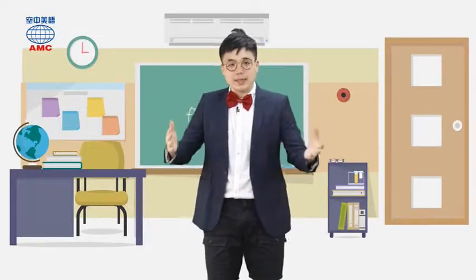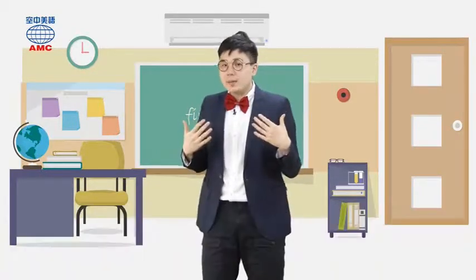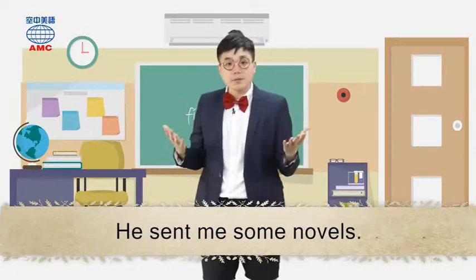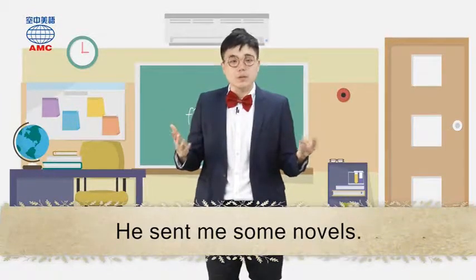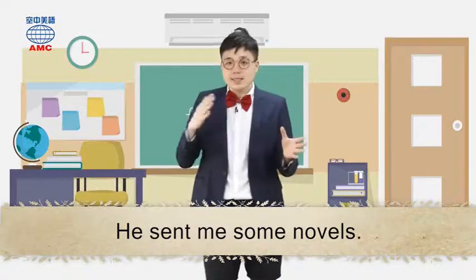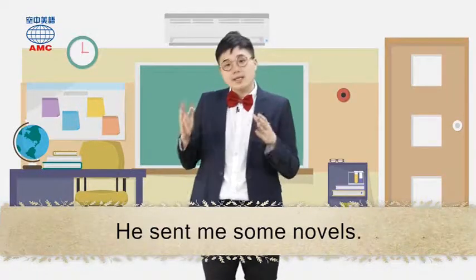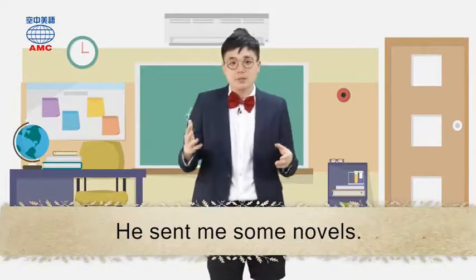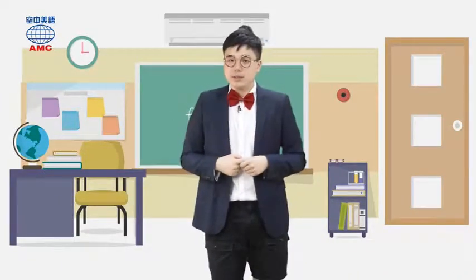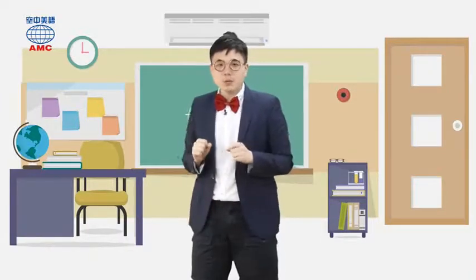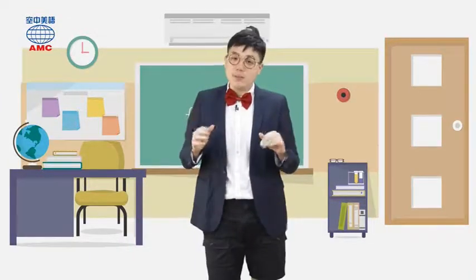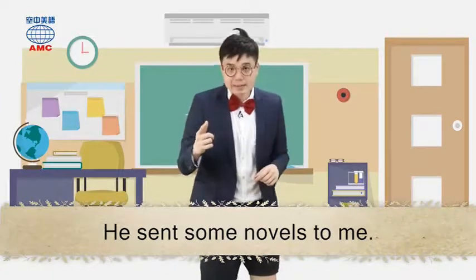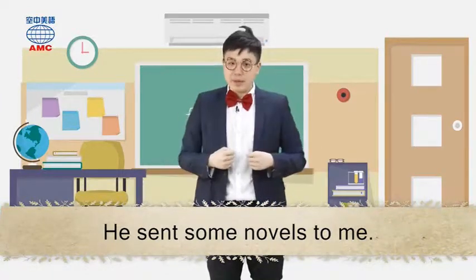例如小兰给了玩具：she gave a toy to me。毛利叔叔呢？He sent me some novels，他寄了一些小说给我。send 是寄的意思，授语动词后面直接加授词 me，再加上 some novels。这句话也可以改成介系词的版本：he sent some novels to me，意思完全一样。